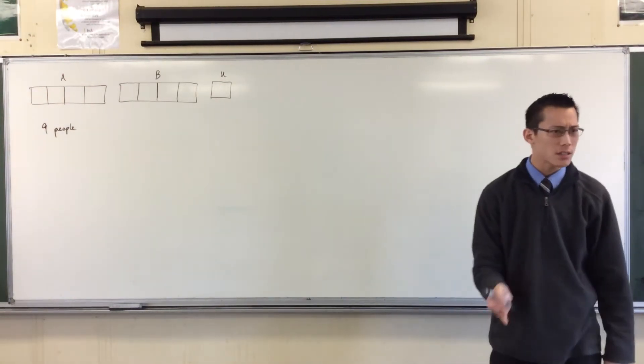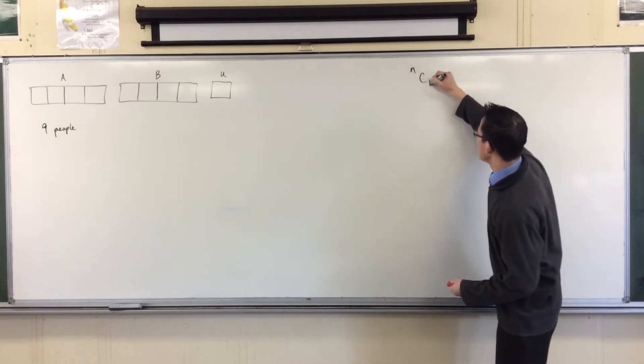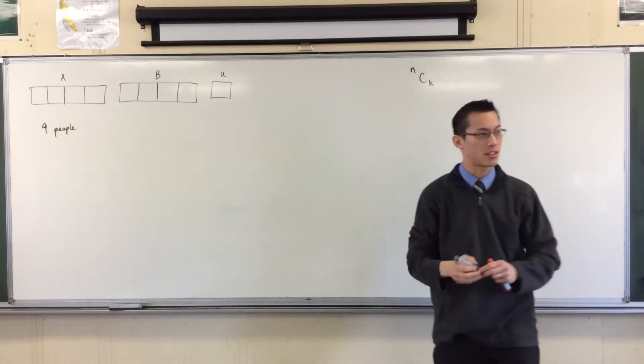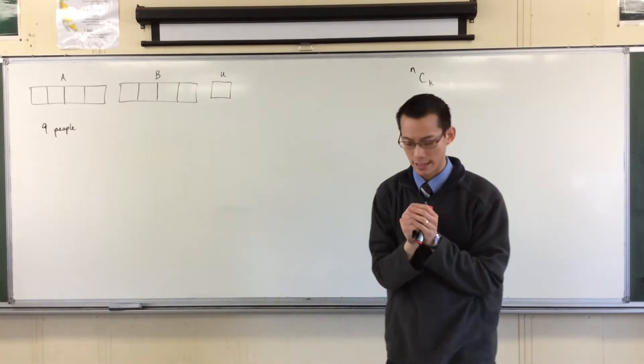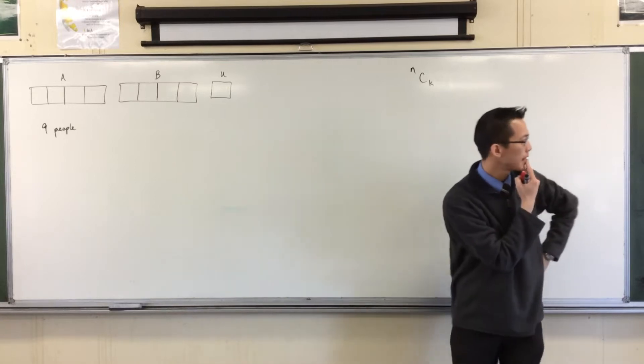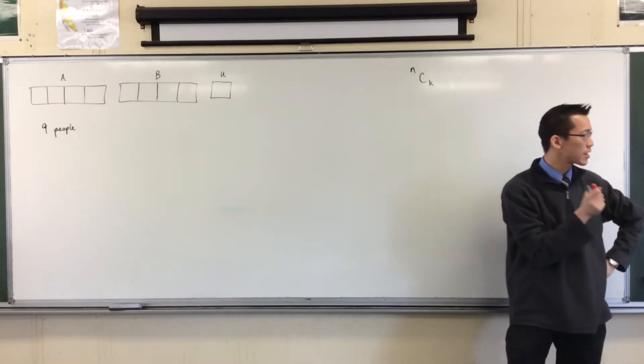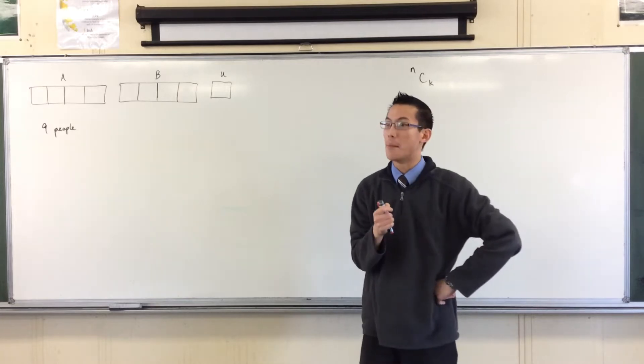We looked at this without restrictions and that was not too complicated. We're introducing this whole nCk notation in the context of arrangements rather than binomial expansions. And then we came to this particular restriction. If two particular people cannot be on the same team, how many different combinations are possible?